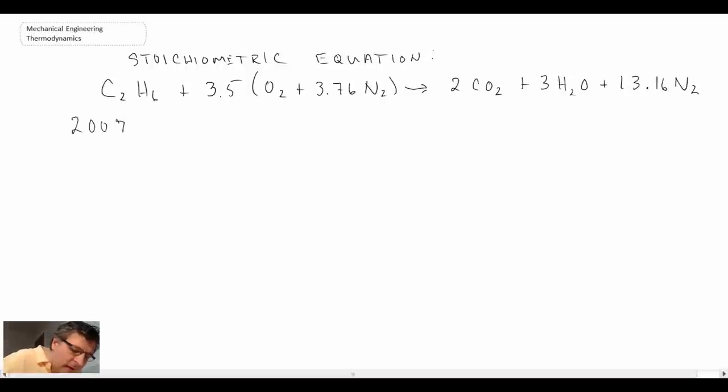And so that's our equation. Now what we're going to do, we're going to introduce this excess air. And we were told that we have 200% excess air. And that means that we're dealing with 3 times the theoretical air.